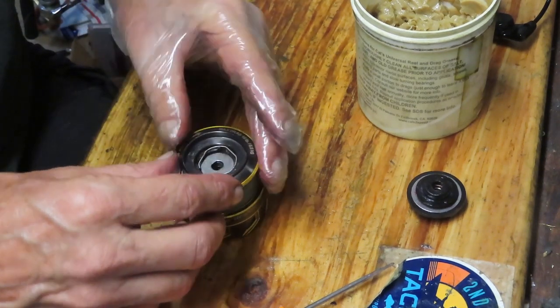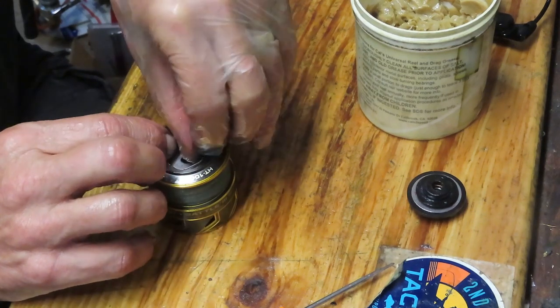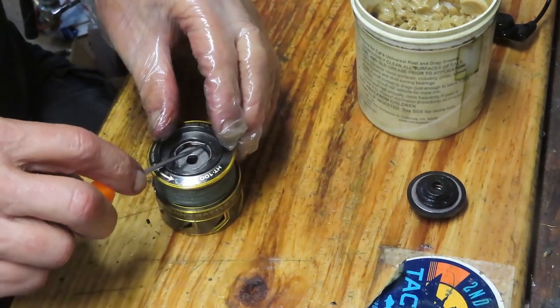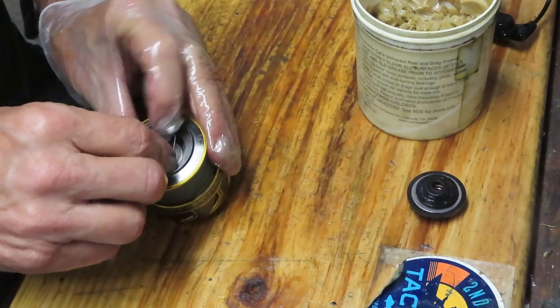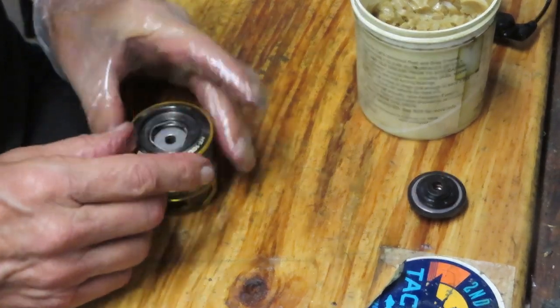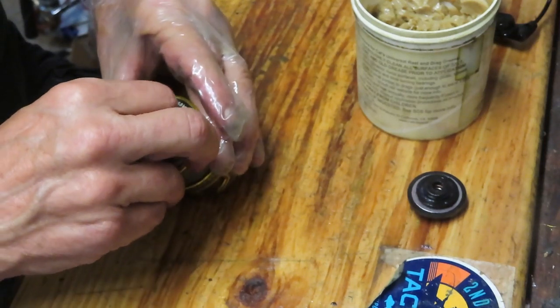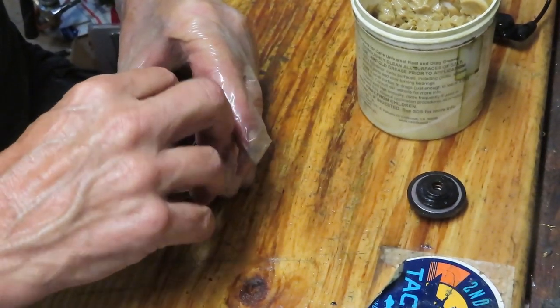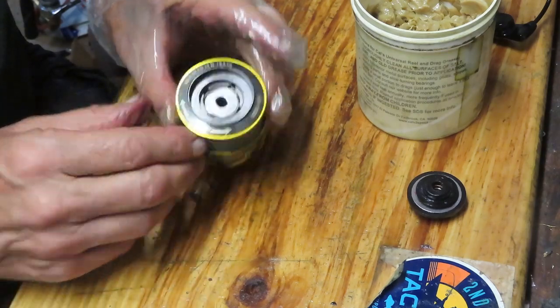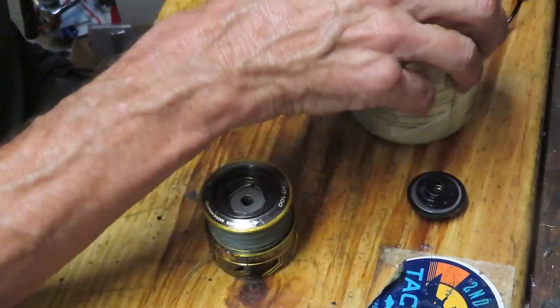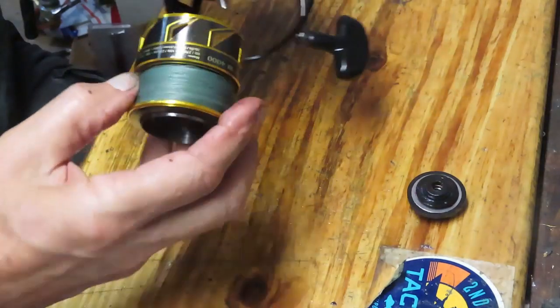All right. To set this retainer spring then, you just want to find the groove inside the spool. On top of those washers, there's a little groove there. Set one side in. Bring it around and set the other side in. Just like that. And now your spool drag retainer clip is set.